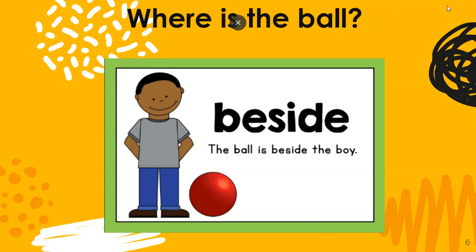So let's review some positional words. Where is the ball? Beside. The ball is beside the boy. So what does beside mean? Beside means next to. Read it with me: The ball is beside the boy.